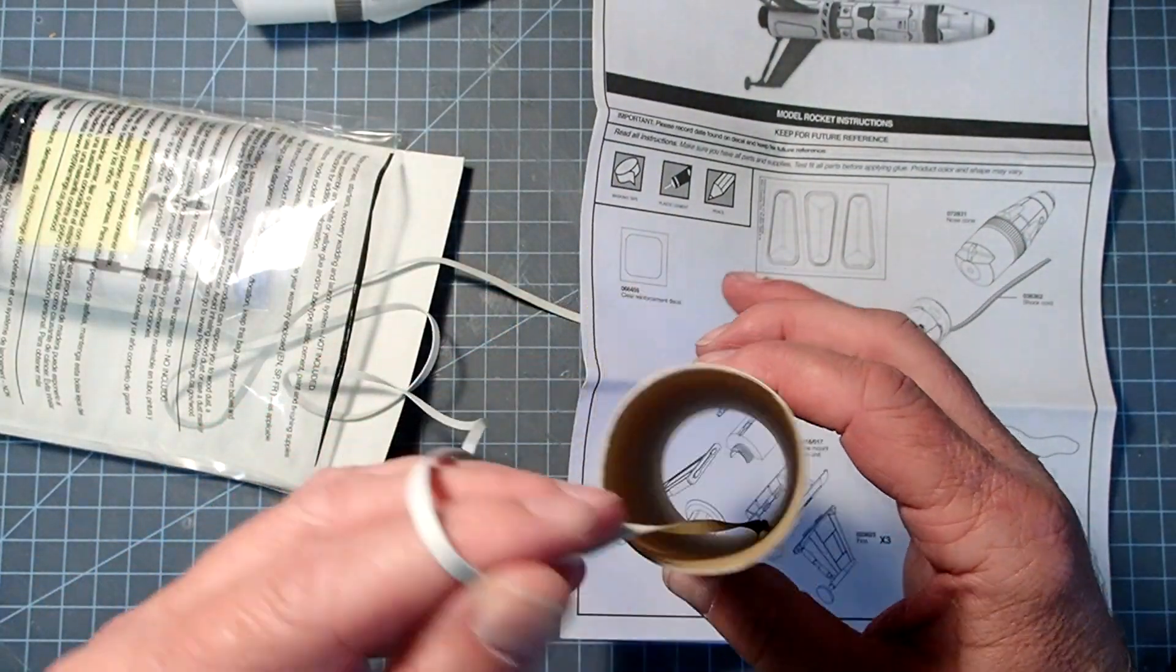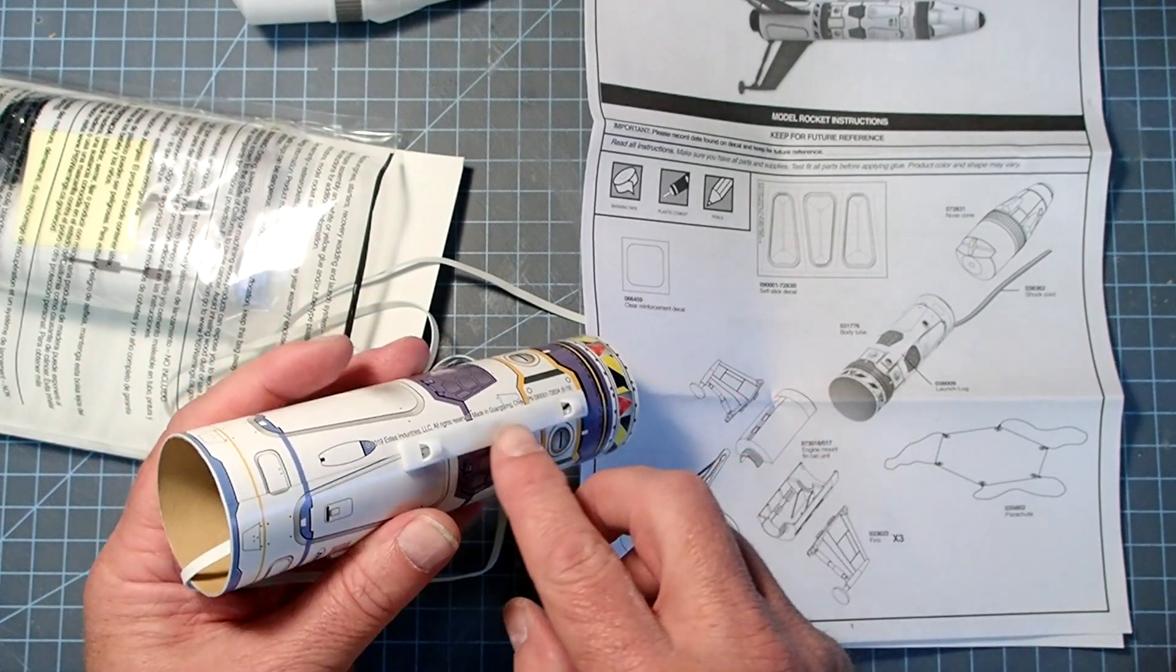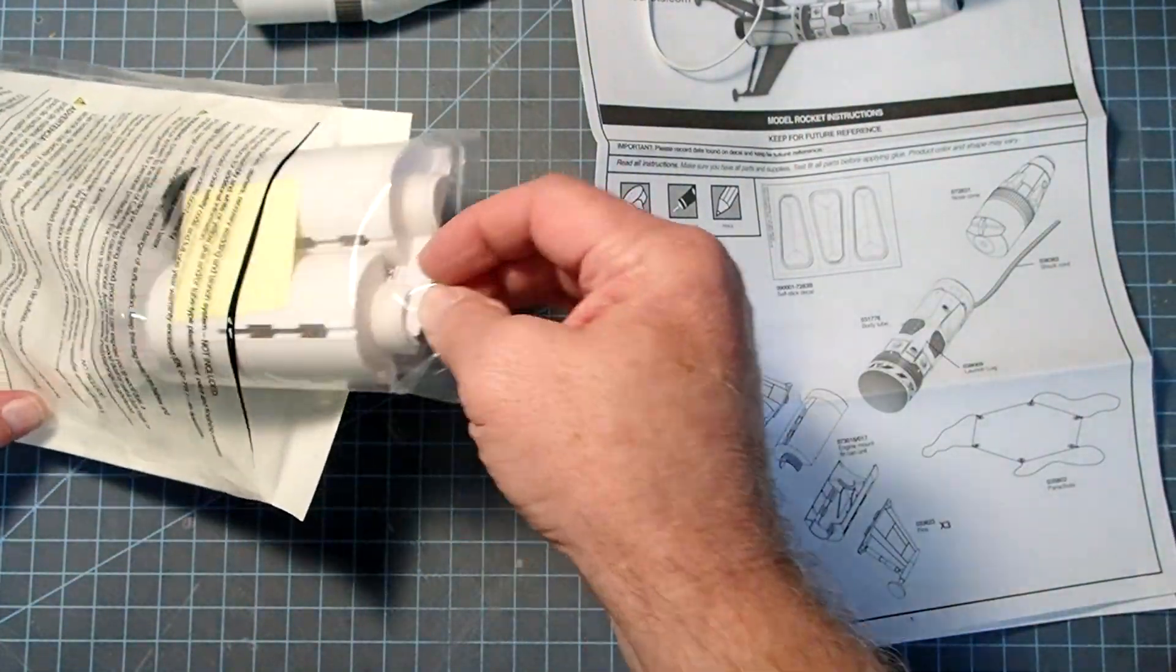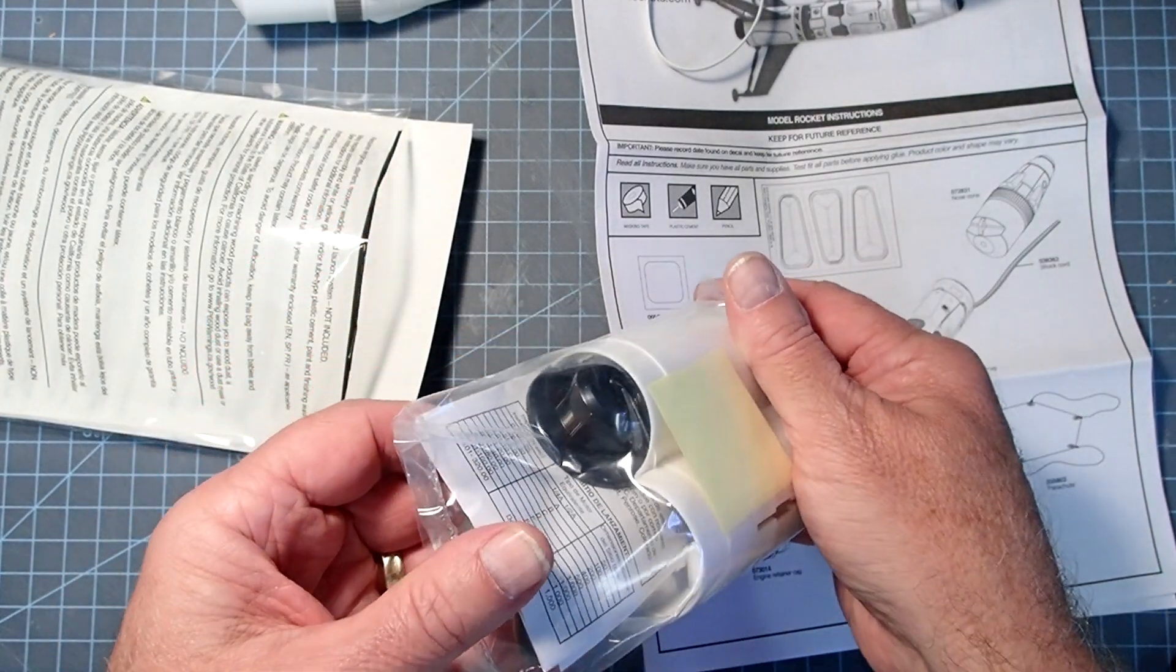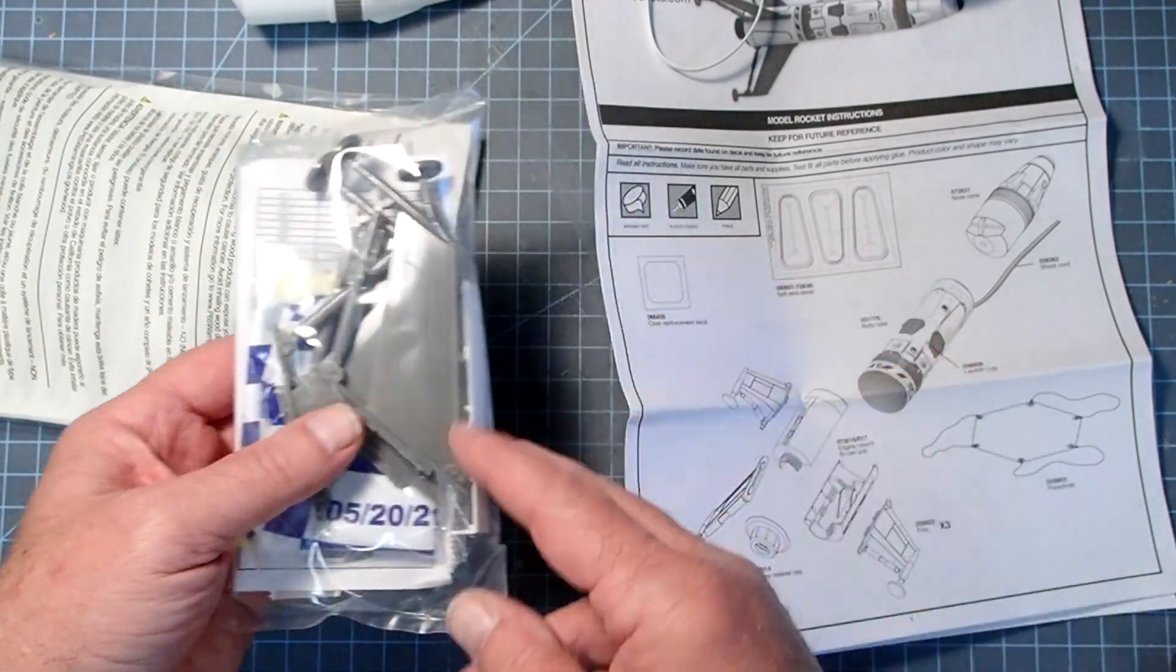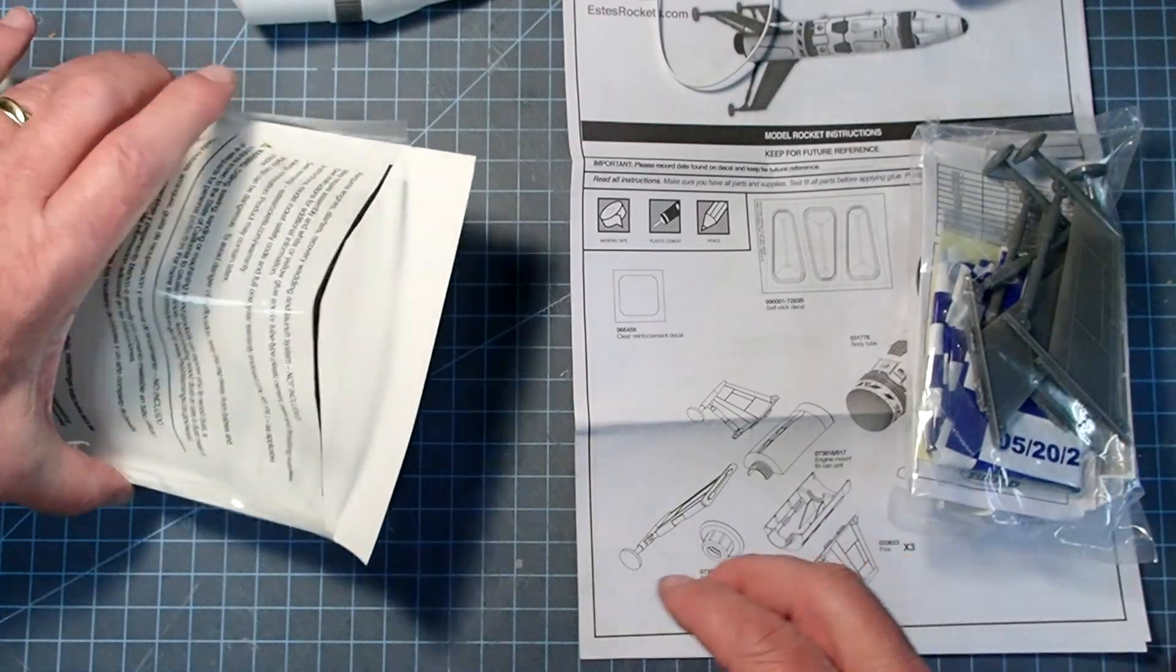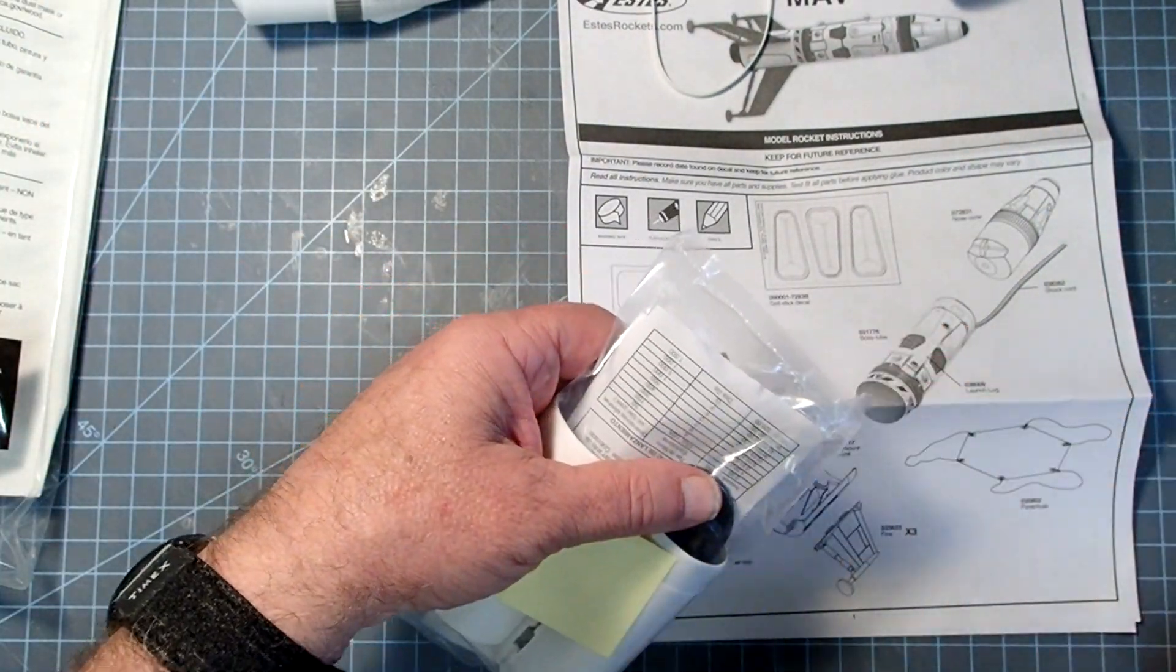It needs to be in there, so don't try and dig it out. Our main body tube has the shock cord pre-attached inside there and it's bonded to a pre-attached launch lug. Then we've got the fin assembly, the fins themselves, motor retainer, and parachute there. That all looks good.